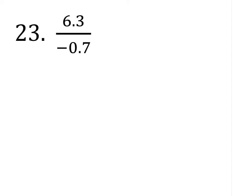23, we got 6.3 divided by negative 0.7. You guys could use long division to do this. It'd be 6.3 divided by 0.7 and divide it that way if you wanted to, just as long as you remember the answer is negative.